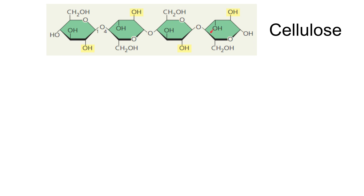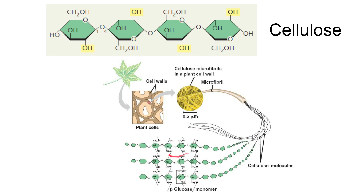Using beta glucose also means the arrangement of hydroxyl groups gives another important property. When many cellulose chains are lined up alongside each other, hydrogen bonds can form between the chains because of those alternating inverted beta glucose molecules. There is a hydrogen bond between monomers in adjacent chains along the full length of the molecule, meaning every monomer can hydrogen bond with the one next to it in the adjacent chain.